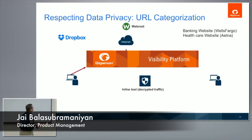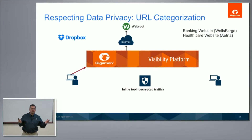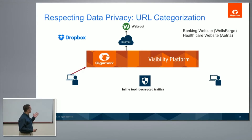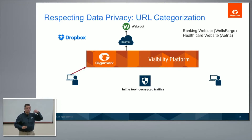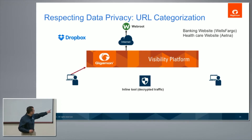Joe is going to Dropbox. We contact a URL categorization service — we use Webroot, one of the industry leaders. Webroot comes back and says this is file sharing, then we look at our policy. The policy says file sharing is no problem, so we decrypt this traffic.